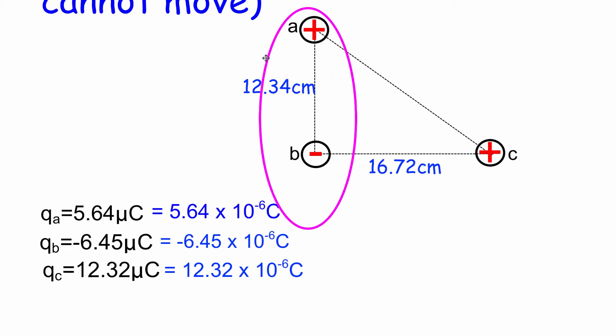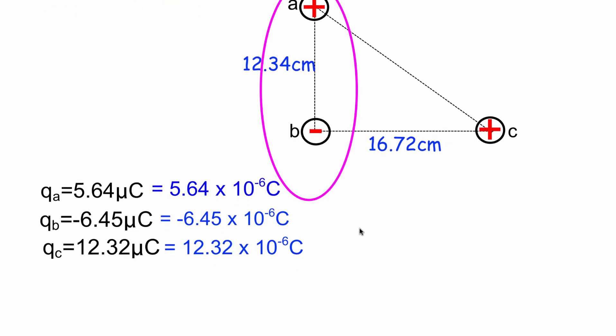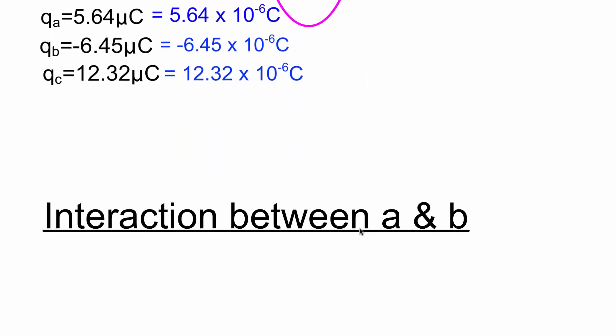Let's start off by looking at the interaction between A and B. A is positively charged, B is negatively charged. So when we find the electrostatic force or the Coulomb force, we know that it's going to be pointing upwards because A attracts B.